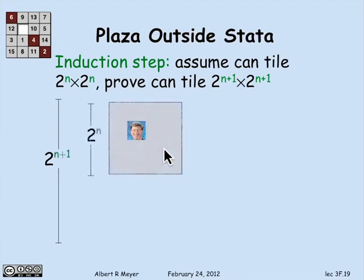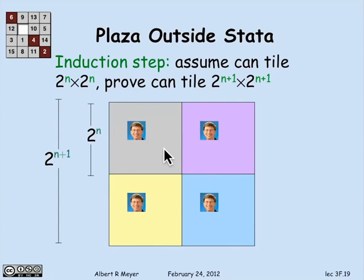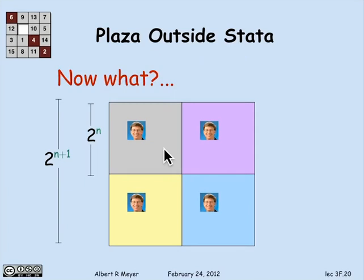So I can assume I can tile each of those four sub-squares with L-shaped tiles leaving Bill in the middle — and now I'm stuck. What do I do? How do I use this ability to put Bill in the middle of each of those four quadrants in order to fill in the whole thing with L-shaped tiles? I'm stuck.